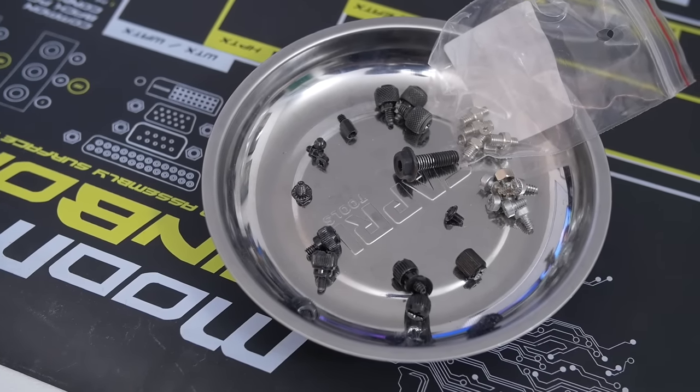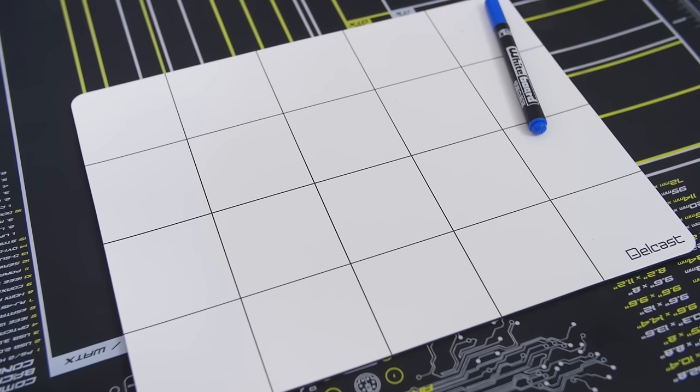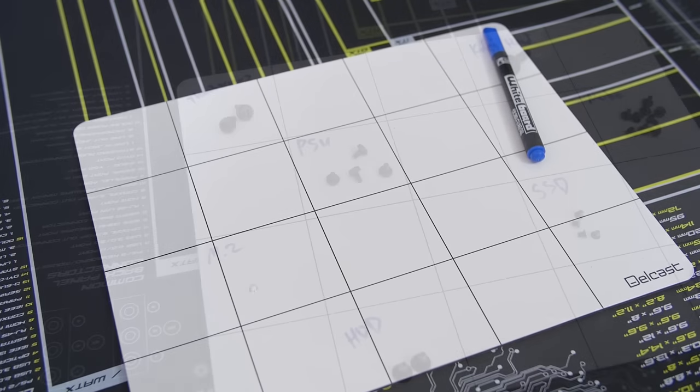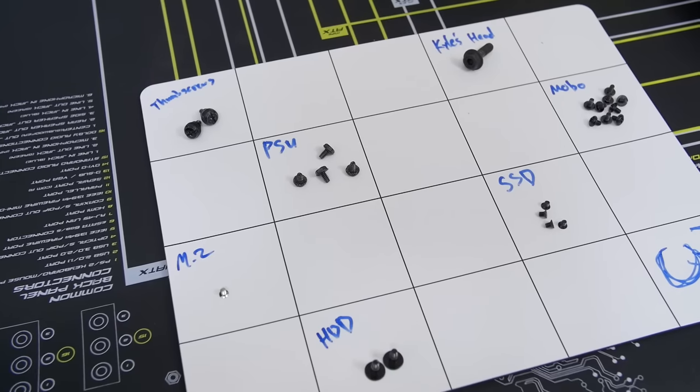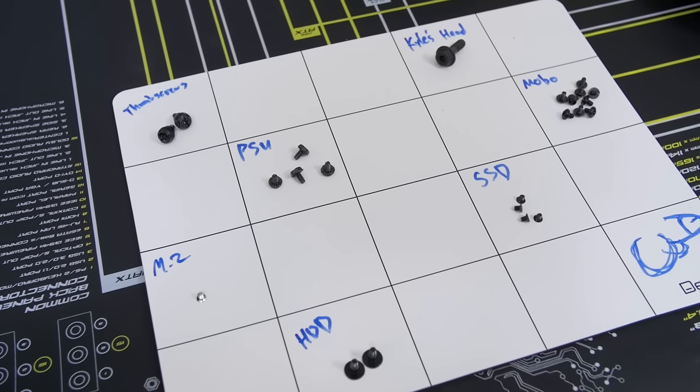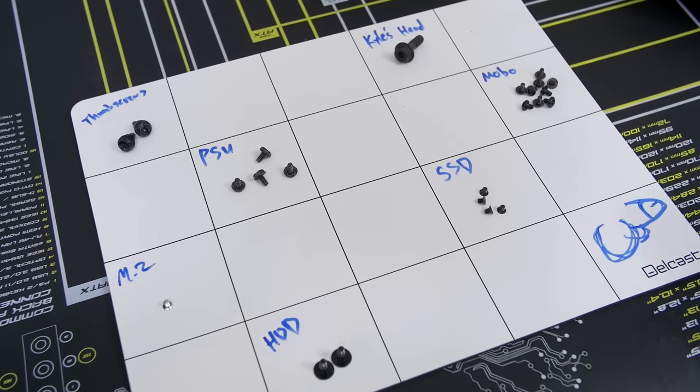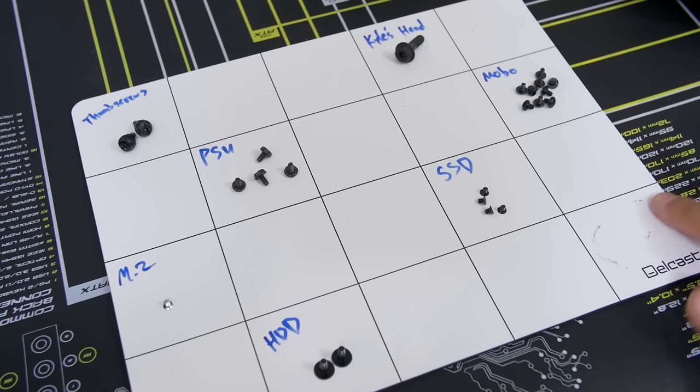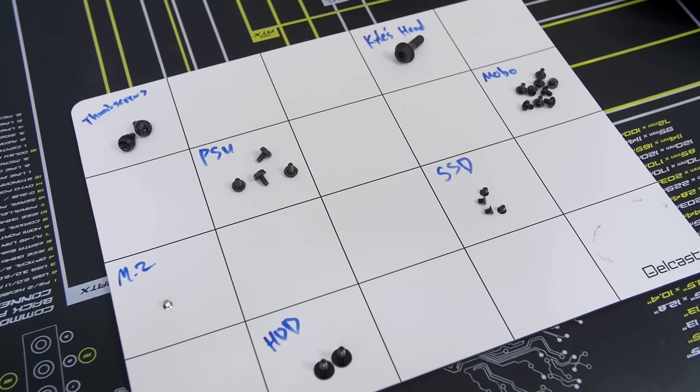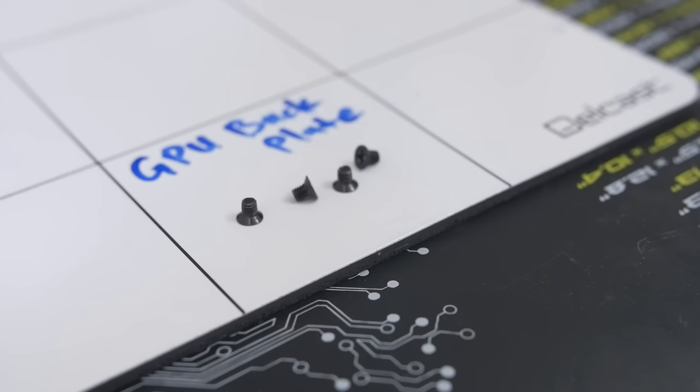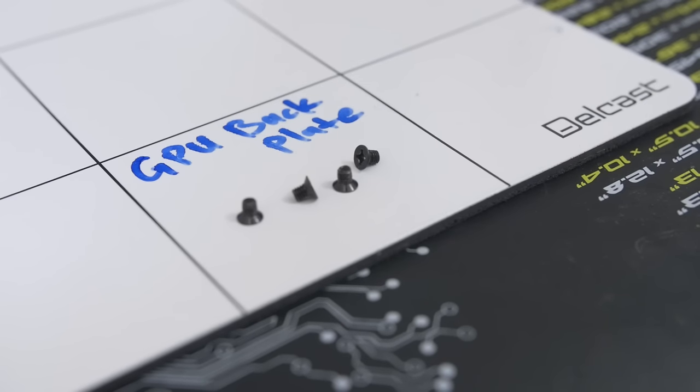What they lack however is organization. So I recently picked up this Dellcast MT-02 Magnetic Project Mat. Measuring 11.75 inches by 9 inches, the mat is divided up into squares and features a dry erase surface for labeling your screws during the disassembly process. Now unless you're new to PC building, you can probably figure out which screws go where without the help of this item. But if you're relatively new to custom water cooling like myself, this mat can be a godsend for organizing and labeling all the little screws for your reference GPU coolers and water blocks.